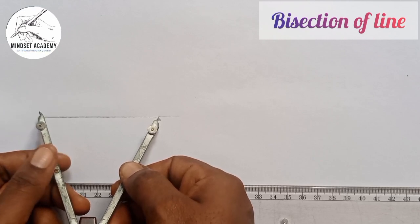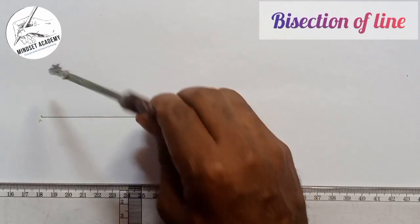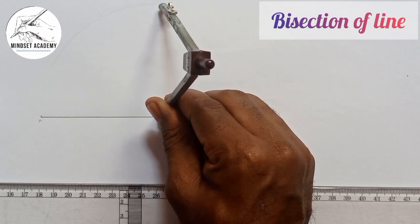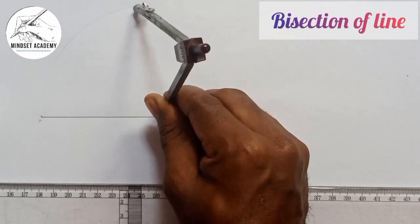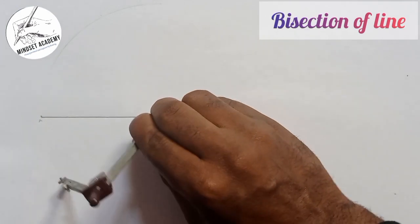Taking A and B as radius, holding one part of it at B, I'm going to strike up this way. I will strike up this way and I'm going to also strike down this way.